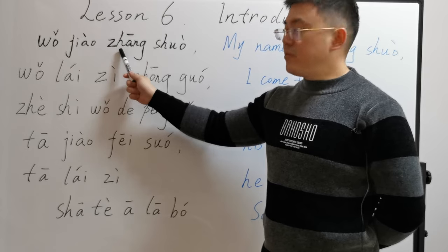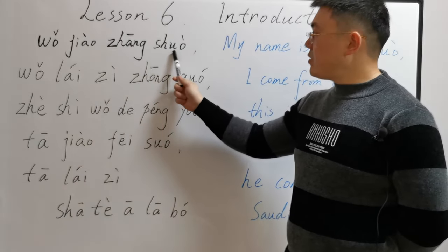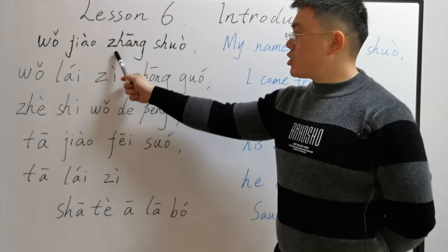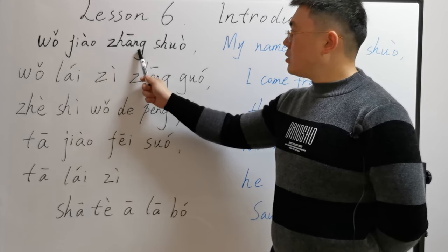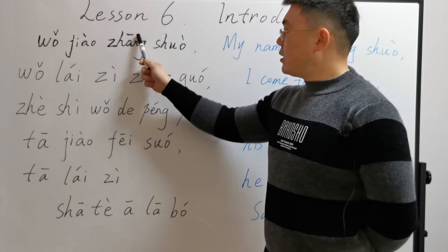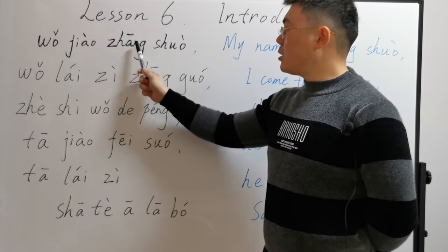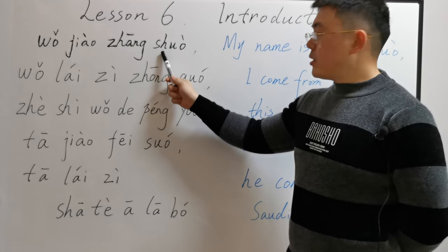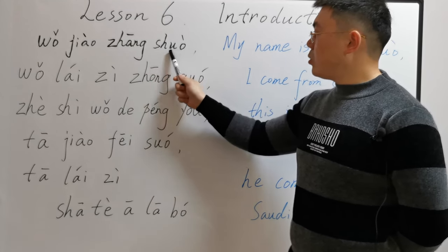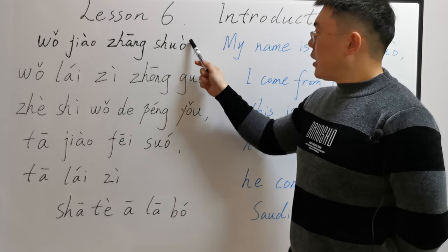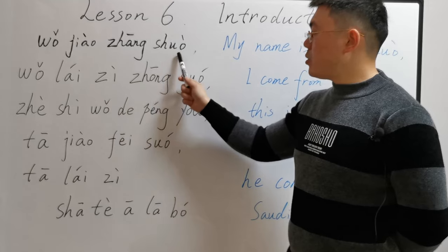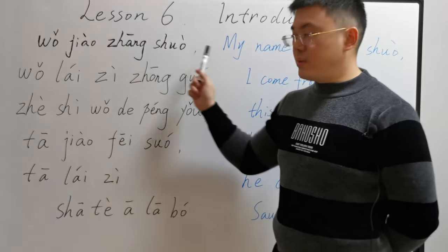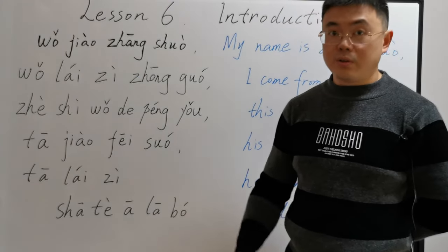张朱 is the family name of this person. In Chinese, family name must come first, and a given name follows it. 张 is an initial, 恩 is the final, and the first tone. 朱 is an initial, with the fourth tone. 张朱. My name is 张朱, or you can call me 张朱.